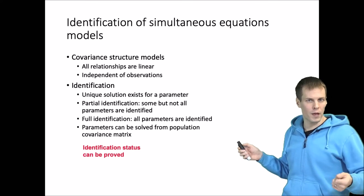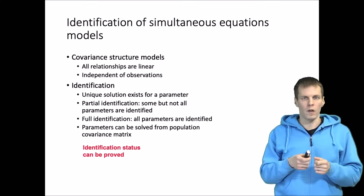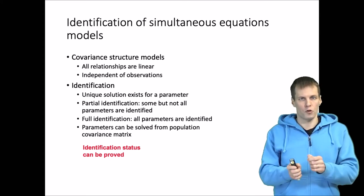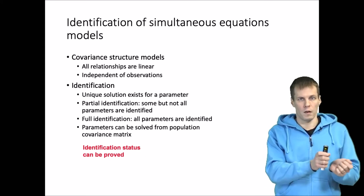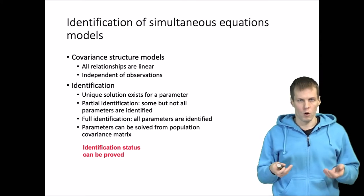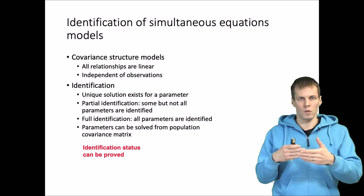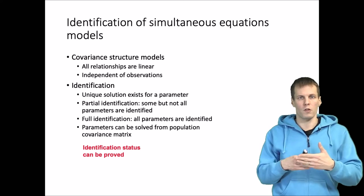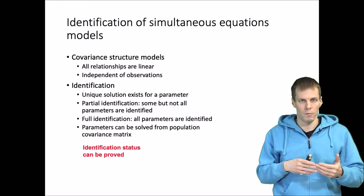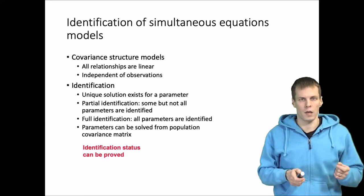The first is the algorithm method, where you actually go and solve from the population covariance matrix to find the model parameters. You don't know the values of the population covariance matrix, but you use the information about the covariances — this is like symbolic math instead of calculating numbers. I'll show you an example on a couple of slides.